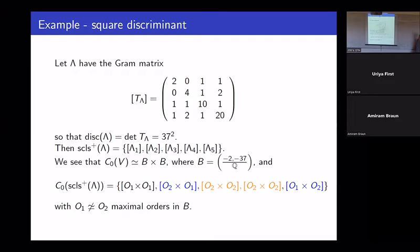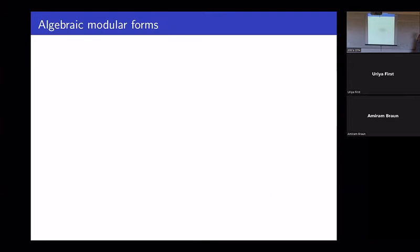If we look at the non-oriented similarity class set, we get only four lattices, because O₂×O₁ and O₁×O₂ become identified. So now we know how to transform questions of local-global obstructions for rank-4 quadratic modules into questions of local-global obstructions in quaternion algebras, which is very convenient.